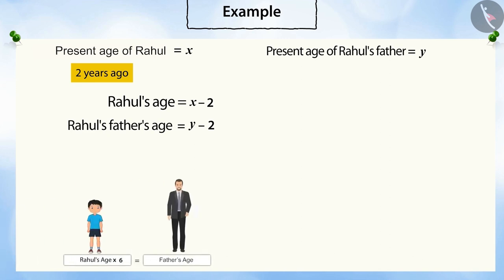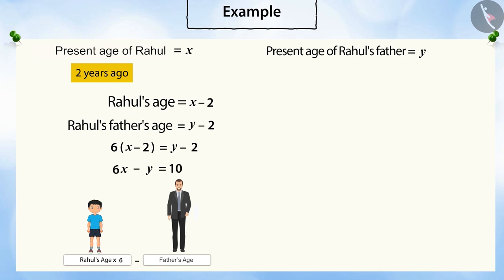Two years ago, the father's age was six times that of Rahul's age. Therefore, if Rahul's age is multiplied by six, both will be equal. Solving six times (X minus two) equals Y minus two, we get a linear equation of two variables: six X minus Y equals ten.